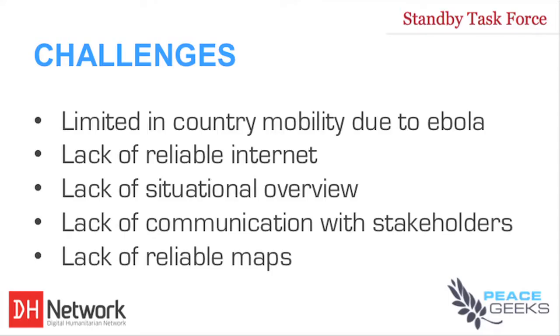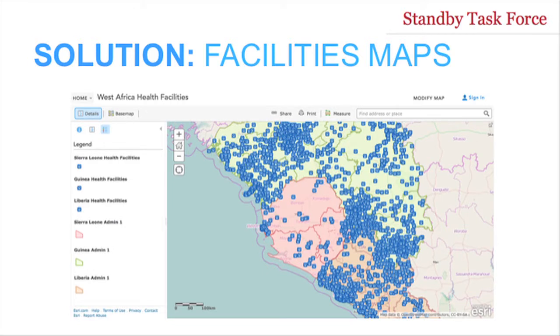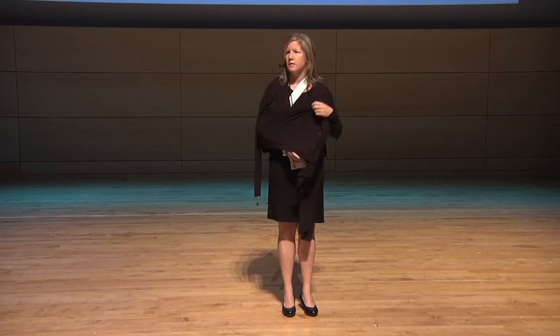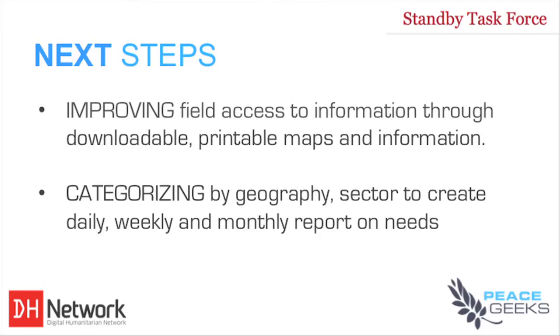There are a number of challenges that arose in producing this, including the lack of mobility in the country, lack of reliable internet, and lack of reliable maps. Nevertheless, over the course of a number of weeks, over 3,500 health facilities were documented, of which about 1,000 have yet to be geolocated — and that's an active project if anybody's interested in supporting that effort. Next steps include improving access to this information, producing printable and downloadable maps for groups on the ground, and continuing to categorize and refine the information so it can be used more effectively.